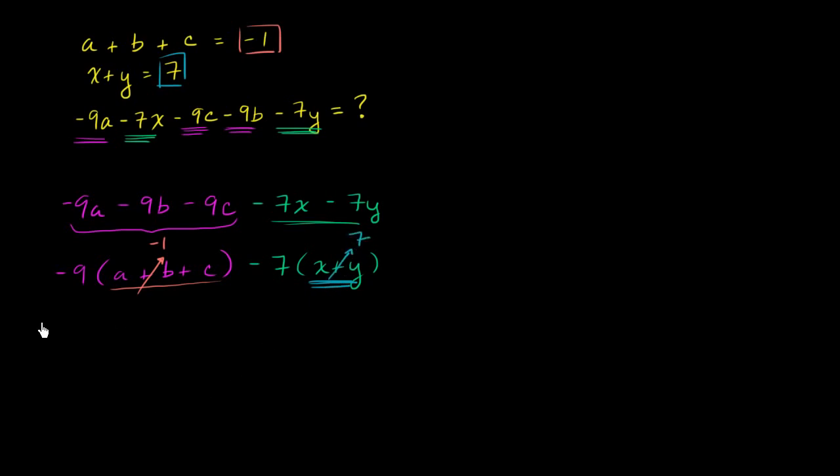So this whole thing simplifies to negative 9 times negative 1 minus 7 times 7. And so this is equal to, negative 9 times negative 1, well, that's positive 9. And then negative 7 times 7 is negative 49. So it's 9 minus 49, which is equal to negative 40. And we are done.